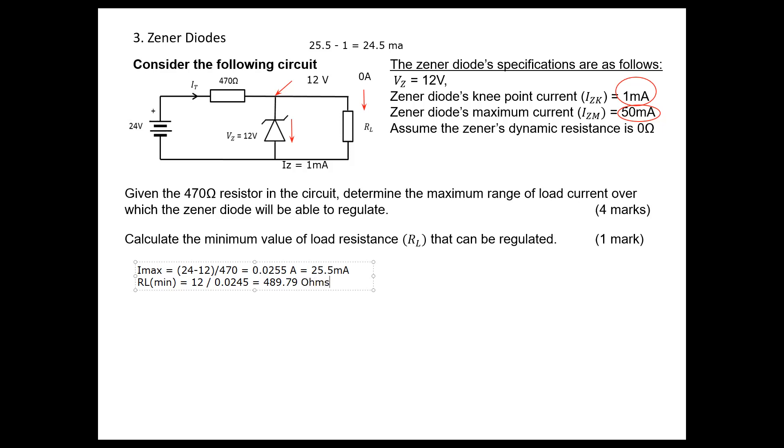In this way we can calculate the range of load current and the range of resistance. The thing we need to keep in mind: in order to have regulation, the Zener needs minimum current through it, and the current to the Zener when we don't have any load connected shouldn't exceed the maximum rated value. I hope you understood this calculation. Thank you very much for watching.